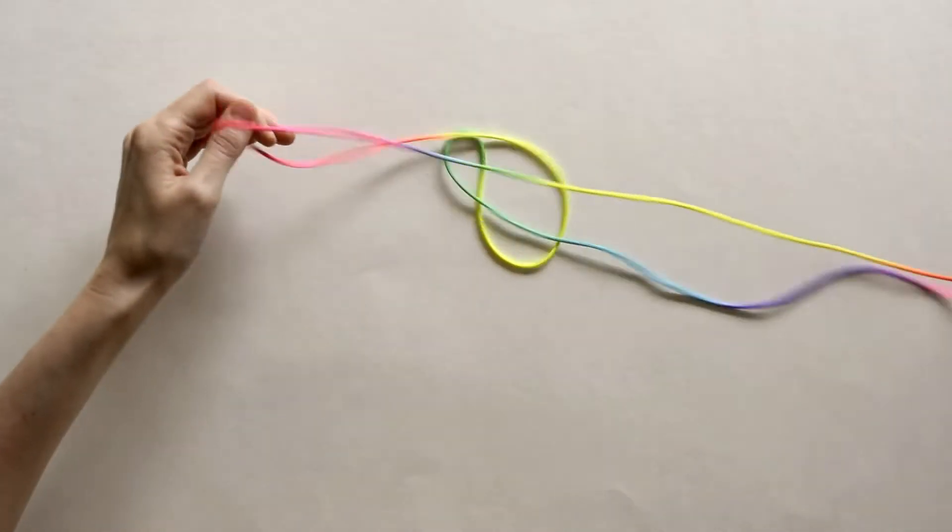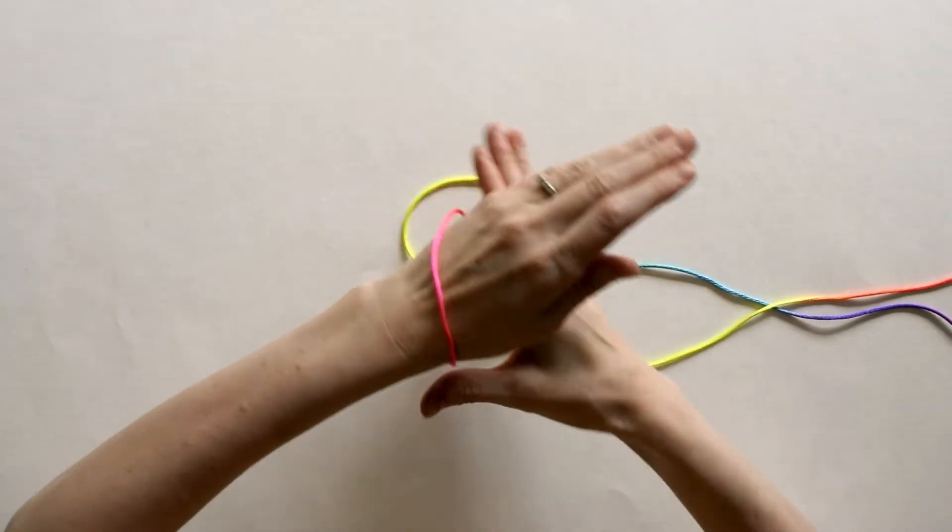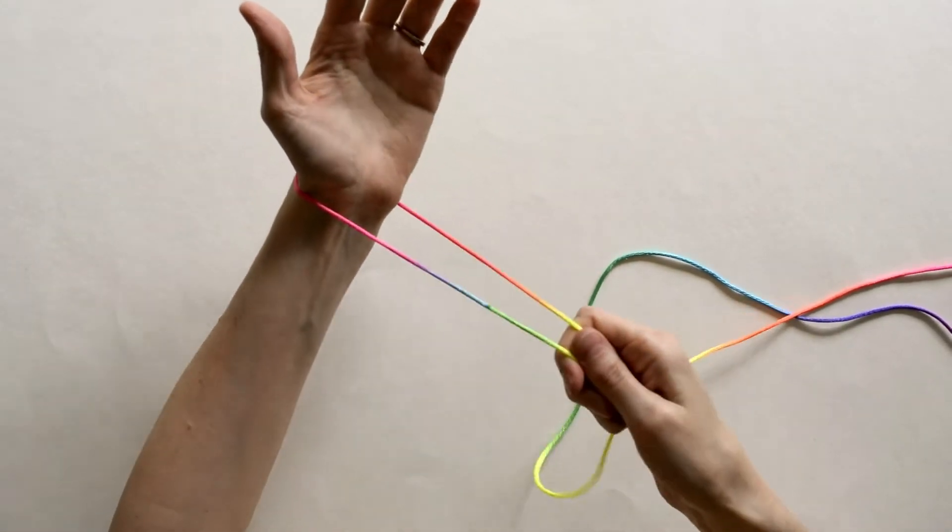In this video, I will show you how to do the flying bat. First, take your string and put it through your left hand so you have a wrist loop.